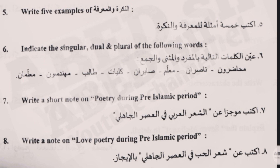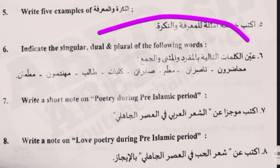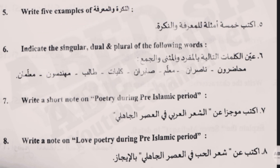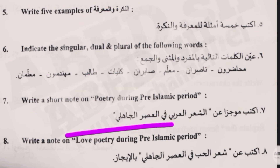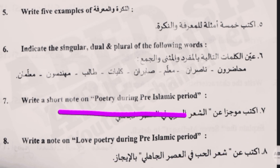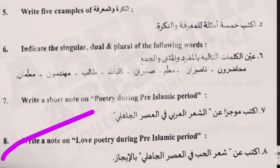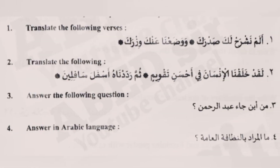Next, write five examples — I don't know how to pronounce it, so try to learn that. Indicate the singular, dual, and plural — this is the important thing. Also, poetry during the pre-Islamic period as well as love poetry during the pre-Islamic period. These are all the things you need to learn.